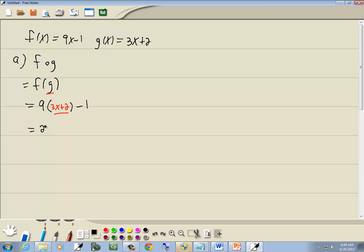9 times 3 is 27x. 9 times 2 gives us 18 minus 1, which gives us 27x plus 17.